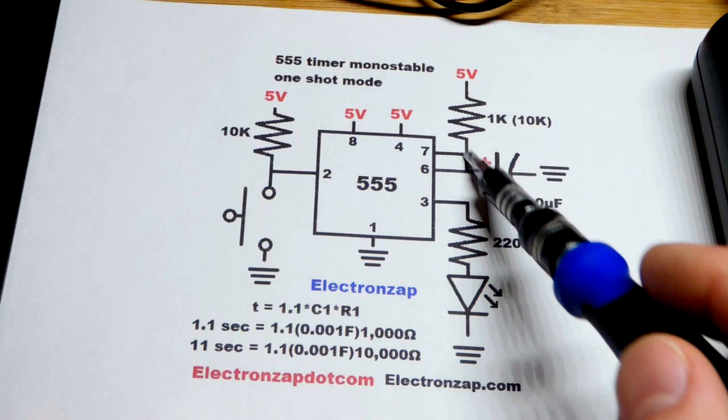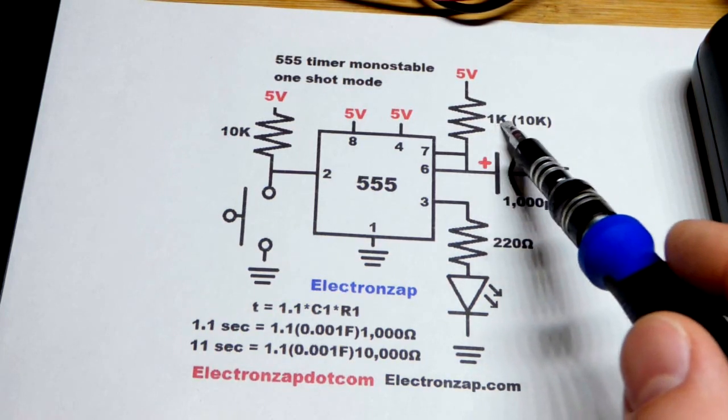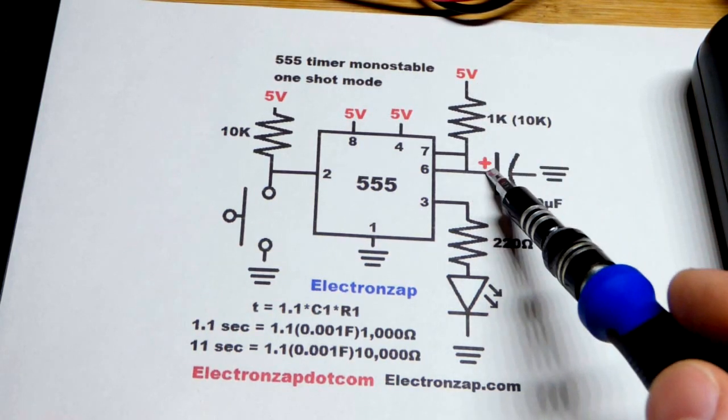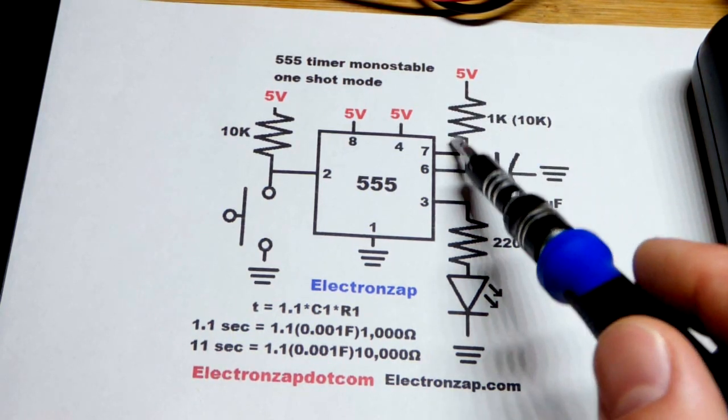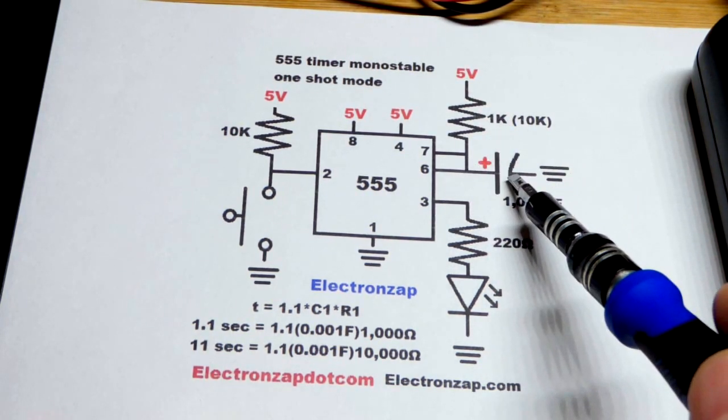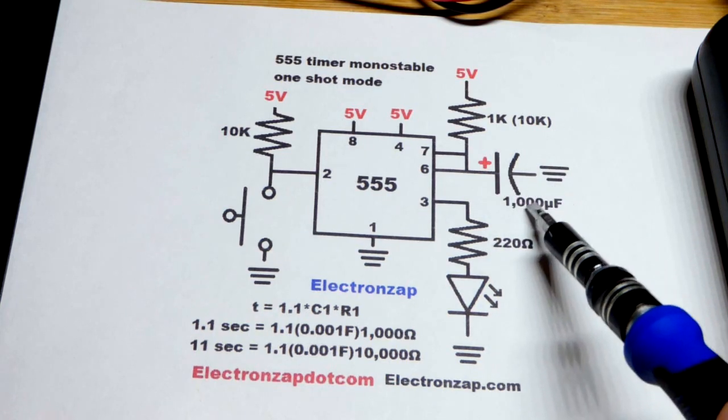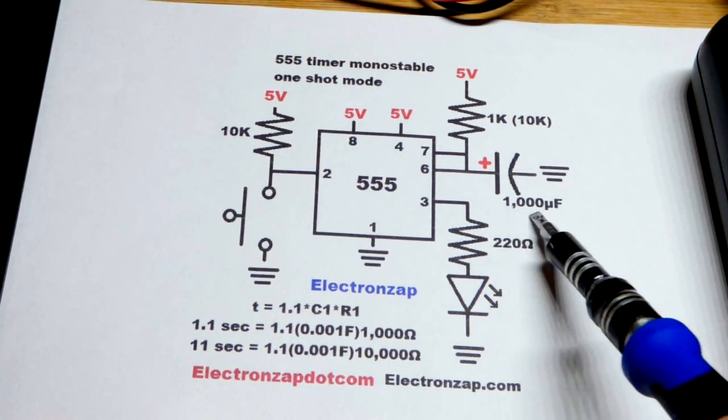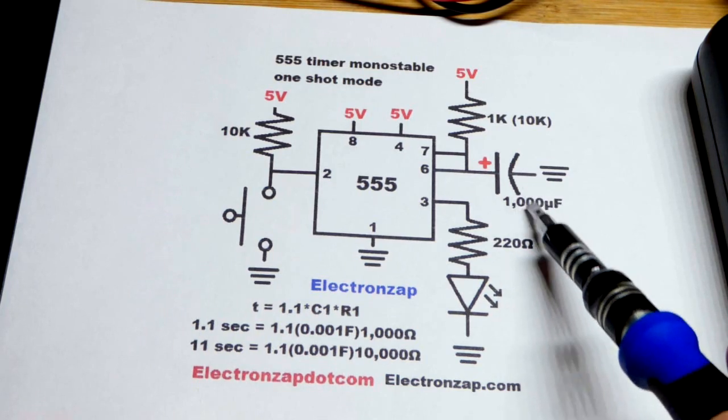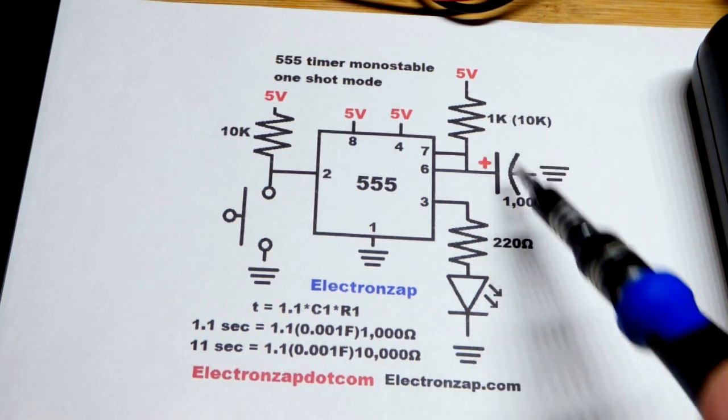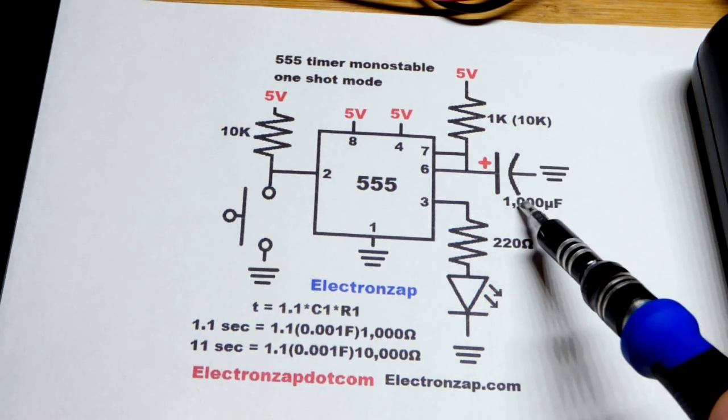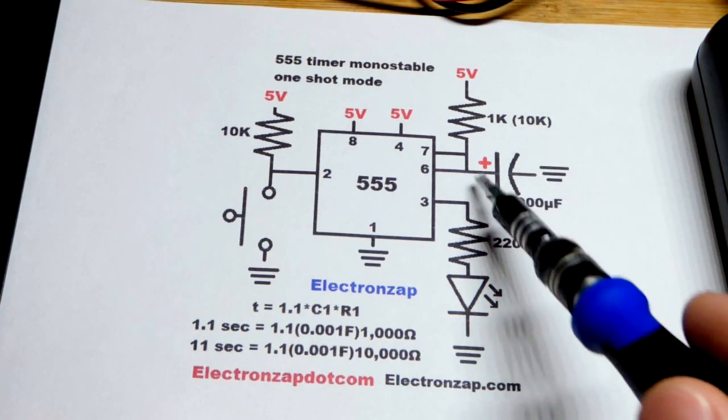The current going through the resistor now charges the capacitor. A lower value resistor will allow more current to flow and the capacitor will charge faster. A higher value resistor will be less current charging the capacitor and it will take longer. Larger value capacitors will take longer, smaller value capacitors will go shorter. We'll look at the math for calculating how much time you're going to get for the values you use.